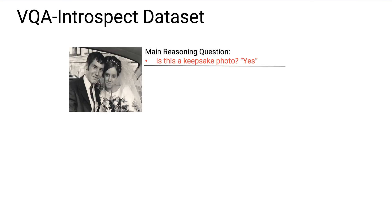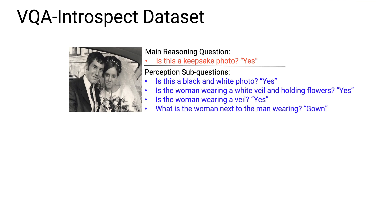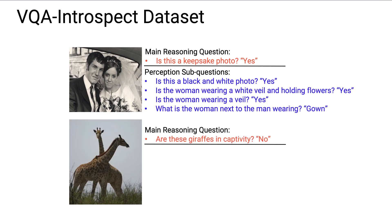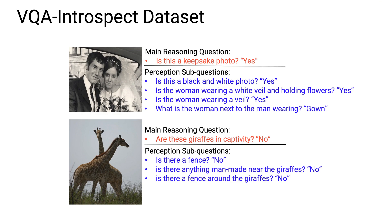For this image and the reasoning question 'Is this a keepsake photo?', people ask about the black and white nature of the picture and the veil the woman is wearing. Similarly, for this image and the question 'Are these giraffes in captivity?', people ask about the existence of the fence. VQA Introspect has about 200K sub-questions for 86K reasoning questions. We evaluate the quality of the dataset along two axes — sufficiency and perception — and show that our dataset is of high quality.